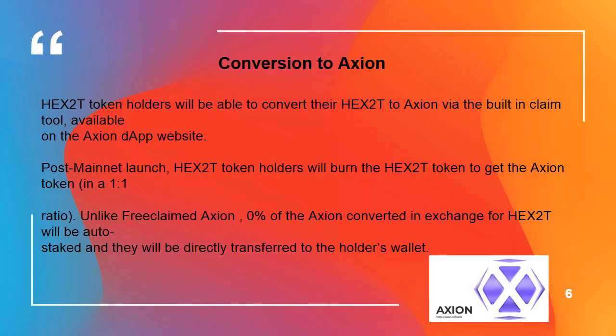Conversion to Axion. HEX 2T token holders will be able to convert their HEX 2T to Axion via the built-in claim tool available on the Axion DApp website. Post mainnet launch, HEX 2T token holders will burn the HEX 2T token to get the Axion token in a 1-to-1 ratio. Unlike free claimed Axion, 0% of the Axion converted in exchange for HEX 2T will be auto-staked, and they will be directly transferred to the holder's wallet.